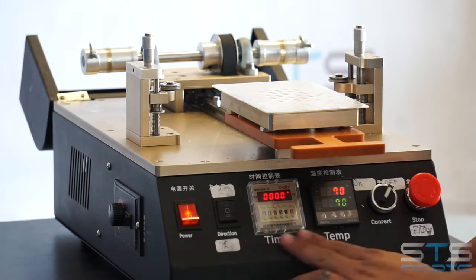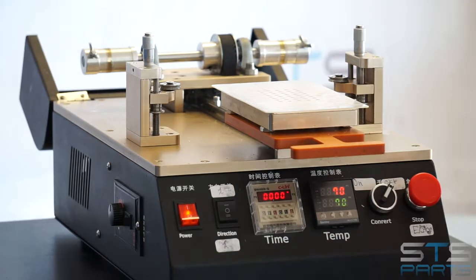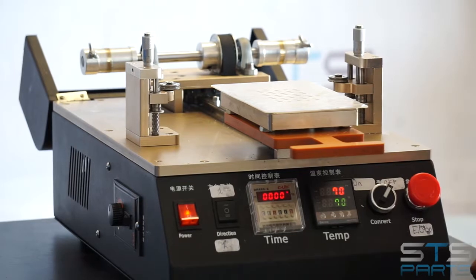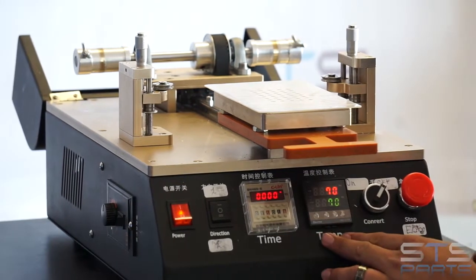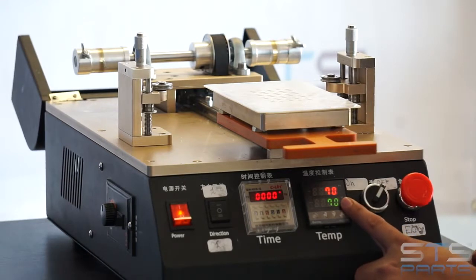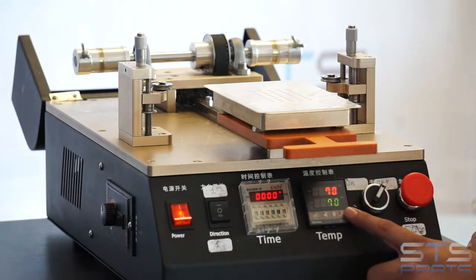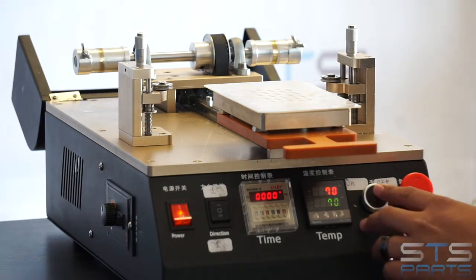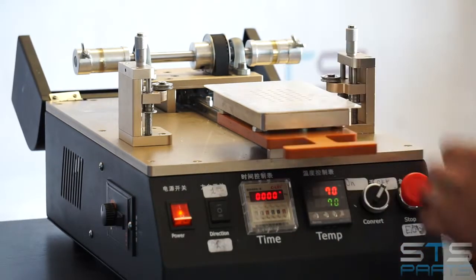Right here it's just setting up the time where your motor is going to be switching back and forth when we turn it on to a semi-automatic function. Here you have the temperature controller. We have set it up at 70 degrees. That's usually the temperature that we use to split our screens. Then here it's basically your on and off switch when you're working with glass splitting.